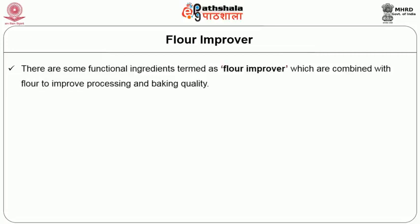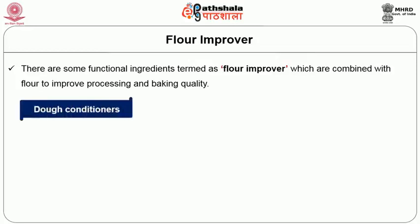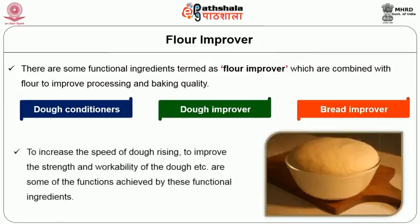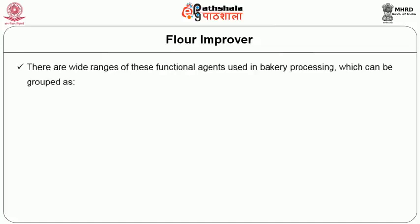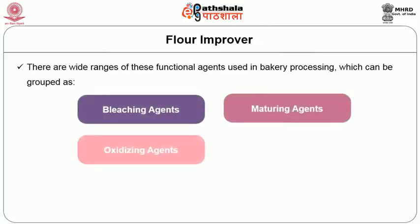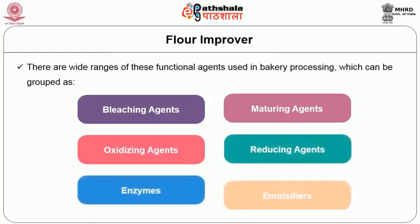There are certain flour improvers used in baked products, combined with flour to improve the processing and baking quality. These are also called dough conditioners, dough improvers, and bread improvers. Their functions include increasing the speed of dough rising, improving the strength and workability of the dough. There are wide ranges of these functional agents, which can be grouped as bleaching agents, maturing agents, oxidizing agents, reducing agents, enzymes, and emulsifiers. These are often sold as mixtures in a soy flour base, as only small amounts are required.